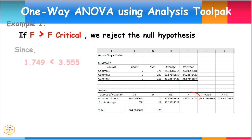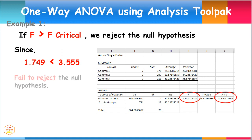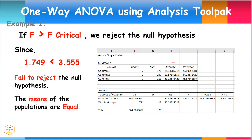Since 1.749 is less than 3.555, therefore we fail to reject the null hypothesis. The means of the populations are equal. The observed difference between the sample means is not convincing enough to say that the means of study hours of students differ. We can conclude that the means of the three populations do not differ significantly.